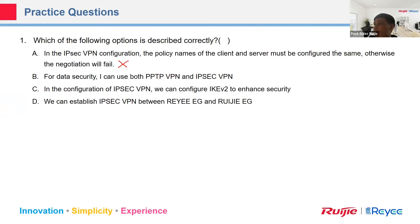That statement is incorrect — the policy name does not need to be the same. Second statement: For data security, I can use both PPTP VPN and IPSec VPN. No — PPTP does not support tunneling over IPSec. Only L2TP can support L2TP over IPSec.